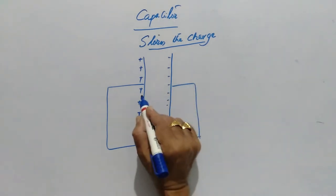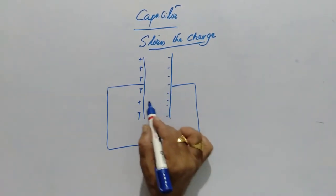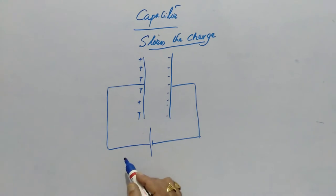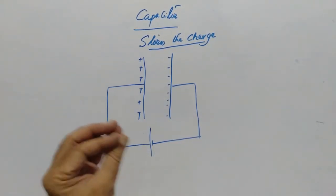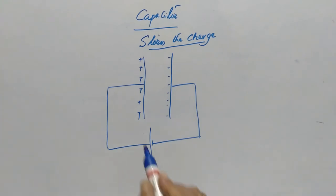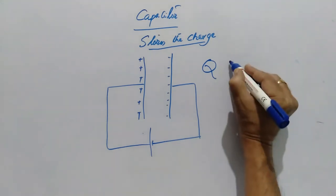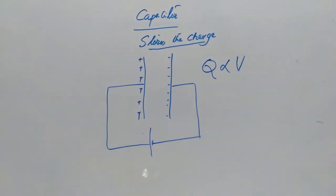Because of these two charges, the electric field is generated between the two plates. By virtue of electric field, the electric potential will be there. This electric potential is increased when the charge is increased.